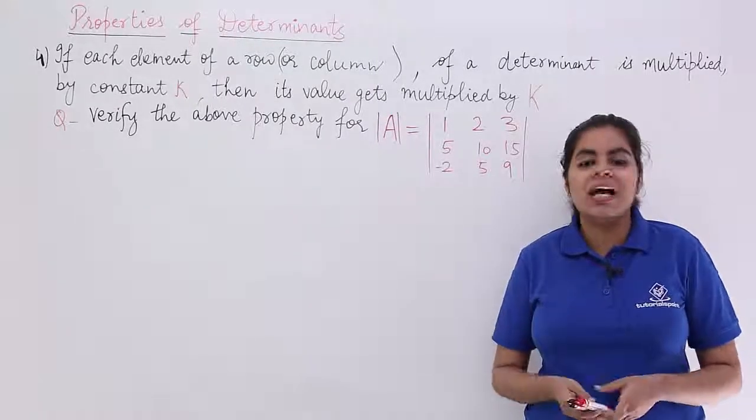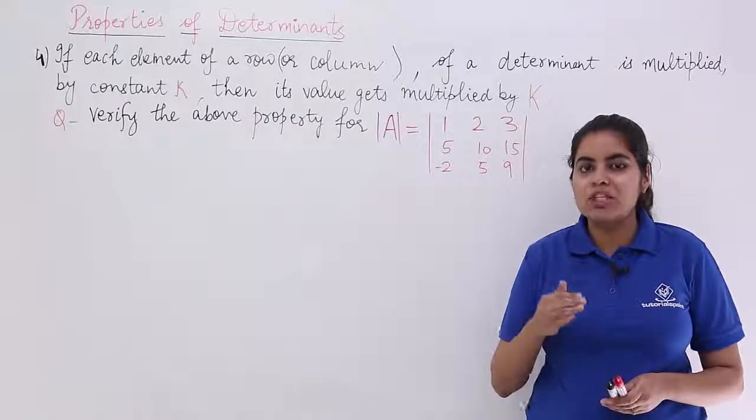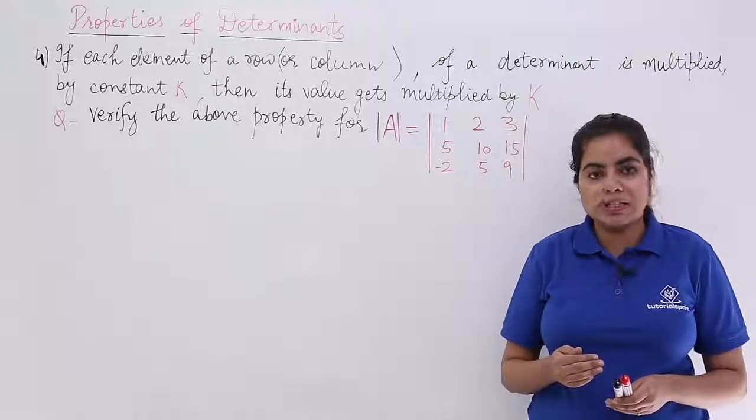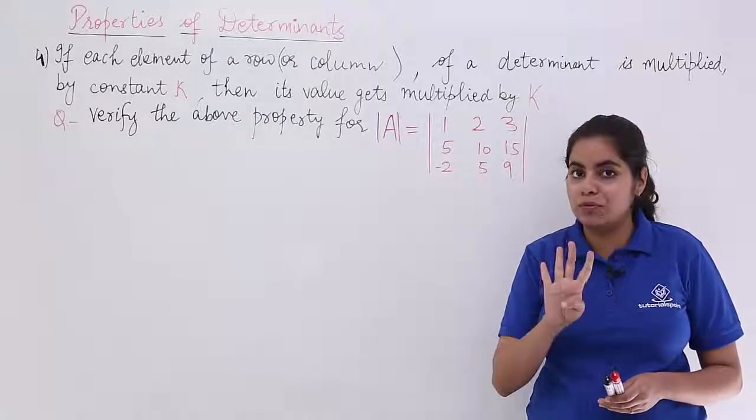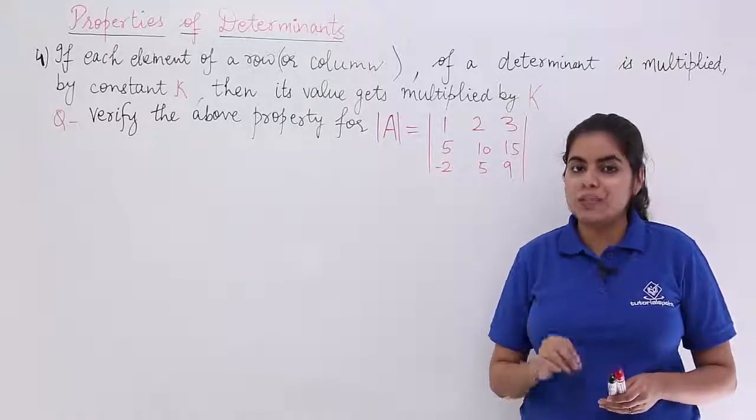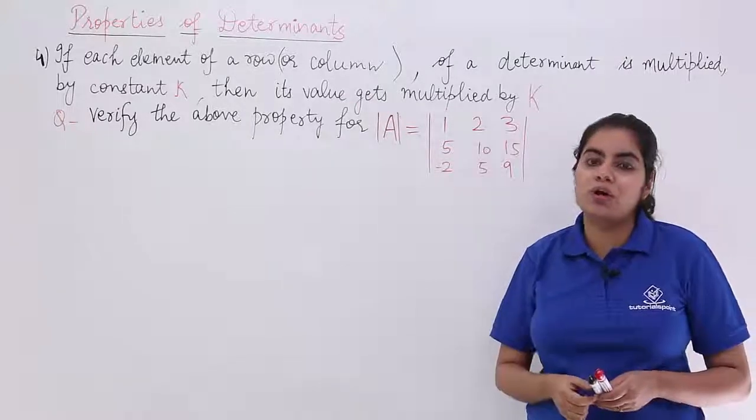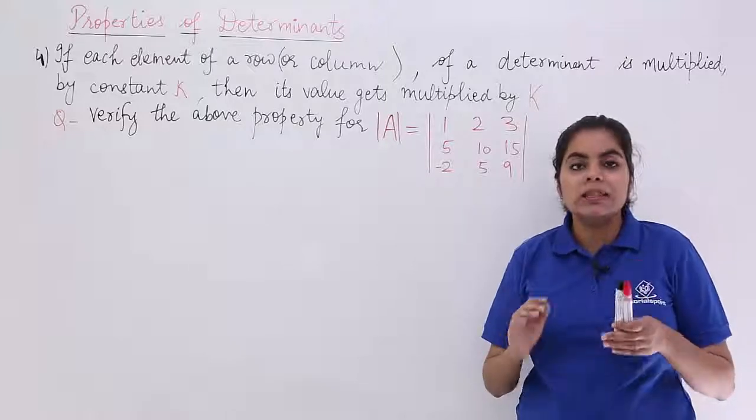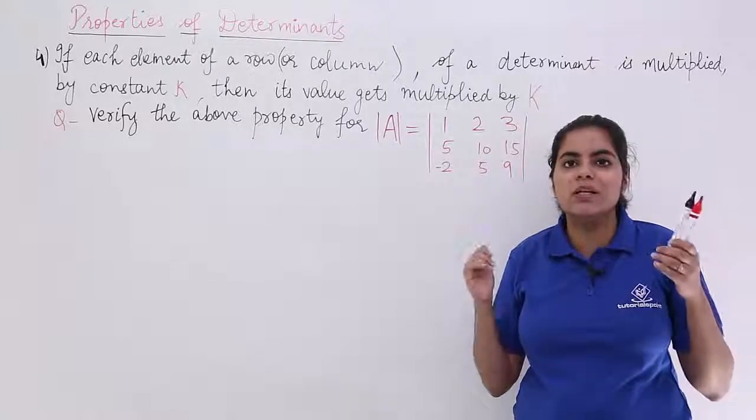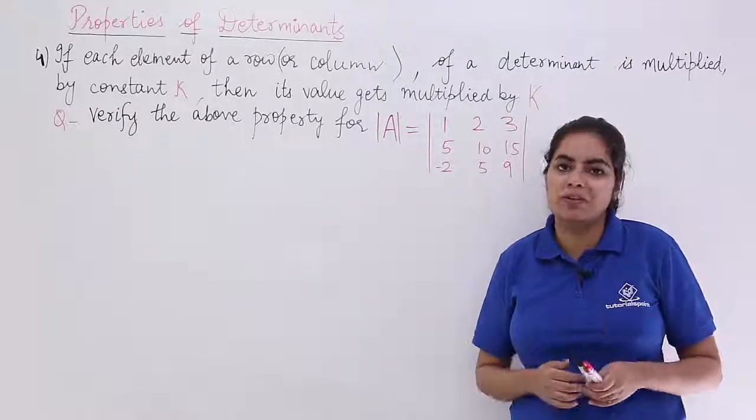In this video, let's see a numerical illustration based on the previous video, property number 4. This property says that if each element of a row or a column is multiplied by any constant, then the value of the determinant also gets multiplied by that constant.